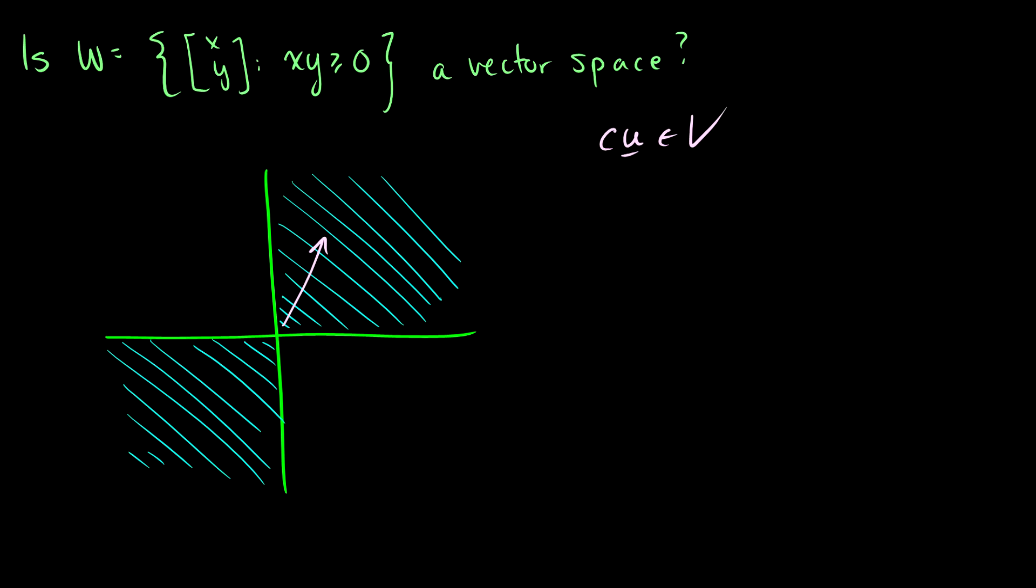Well, if it's up here, we're going to end up down here. If it's down here, we're going to end up up here. So these multiplication tricks aren't going to work for this one. Instead, we should probably find two vectors when added together that aren't going to be in our vector space.